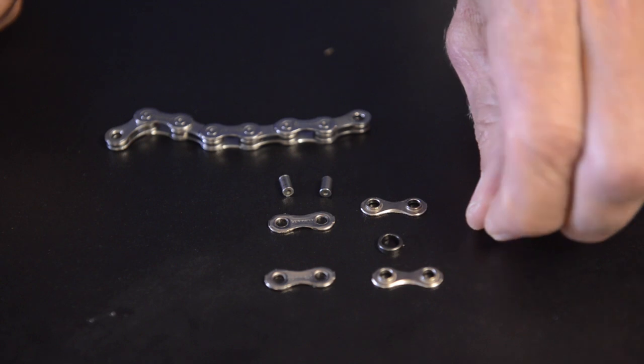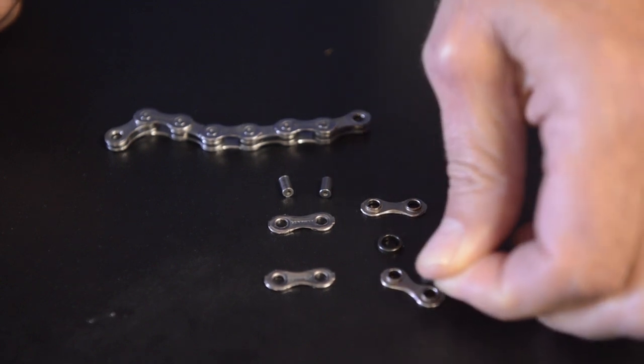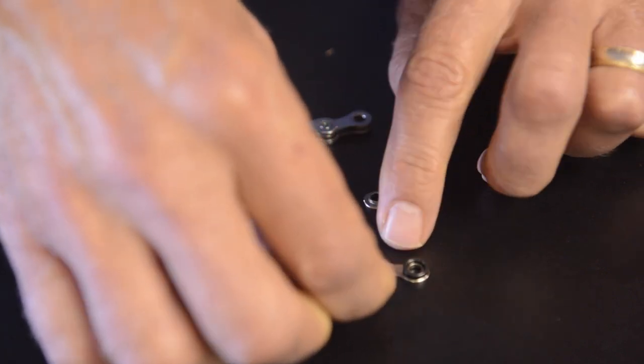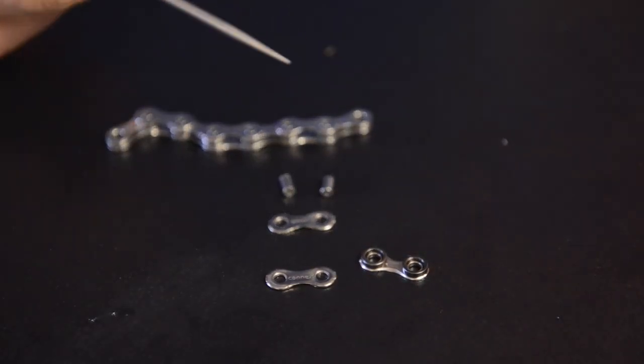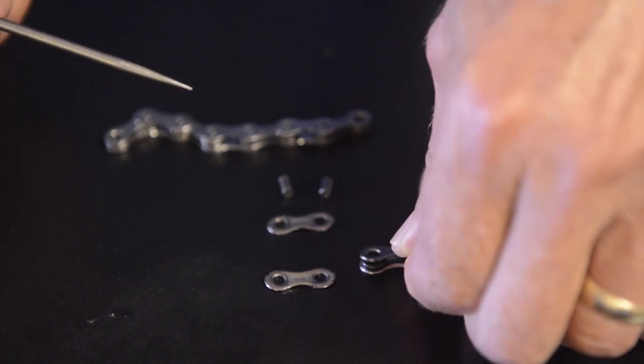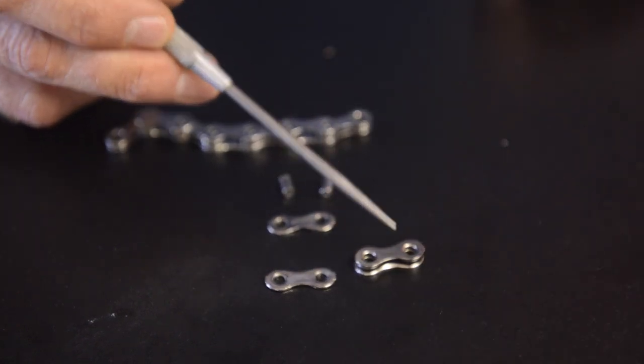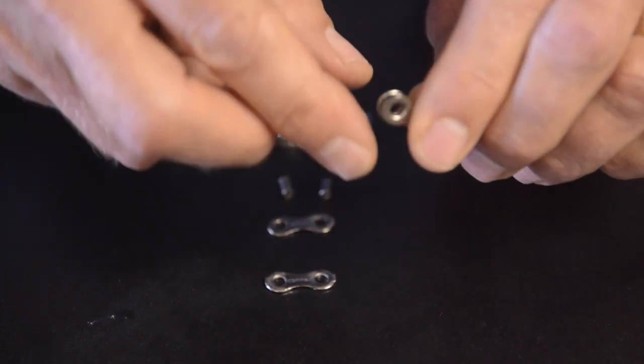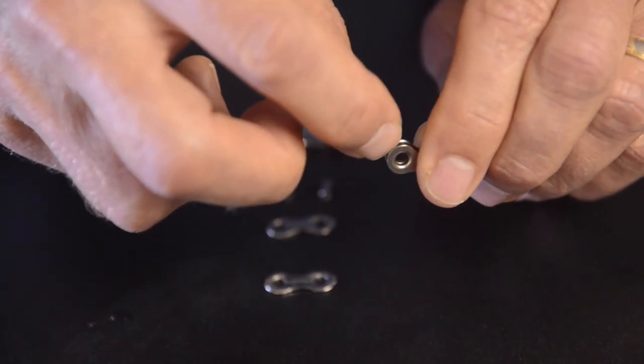The rollers can move freely on the collars of the inner link. So the inner link goes together like that and like that, and then the other side of the inner link goes on top of them and it forms that assembly right there. You see that this roller can move on the collars.